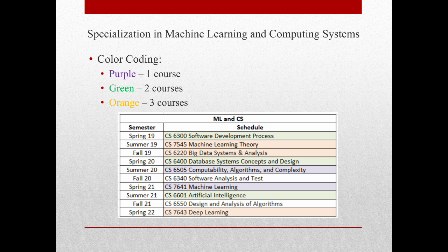I have decided to concentrate on machine learning and computing systems. The main reason I chose computing systems over interactive intelligence is because I thought it would give me a more rounded understanding of the subject. I do plan to complete the last few courses unofficially on Udacity, just so I have the knowledge for all three concentrations.